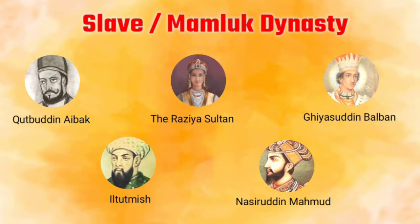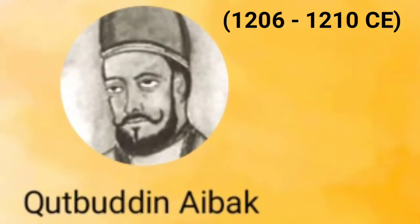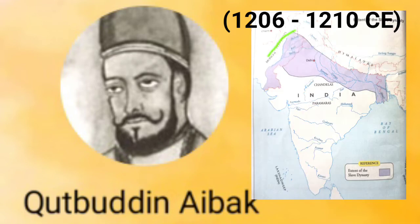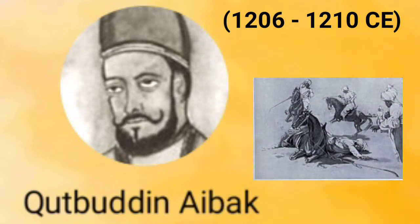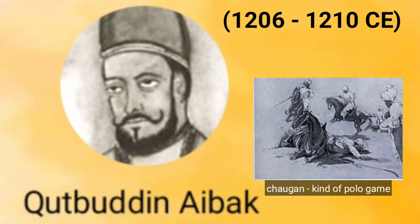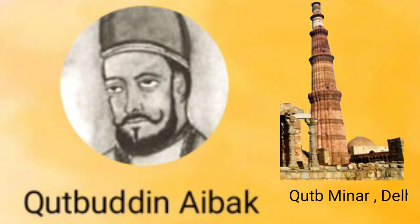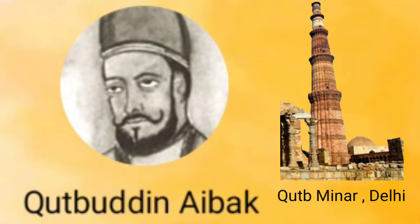Now let us see the major rulers of this dynasty. First we will see Qutbuddin Aibak. He established the Sultanate in Afghanistan and the northern part of the Indian subcontinent, which came to be known as the Delhi Sultanate. He constructed the Quwwat-ul-Islam mosque in Delhi and Adhai Din ka Jhonpra in Ajmer. He died in an accident in 1210 CE while playing Chogun, which is a kind of polo game played on horseback. The most important construction he started was Qutb Minar in Delhi, though he could not complete it.